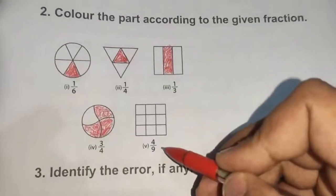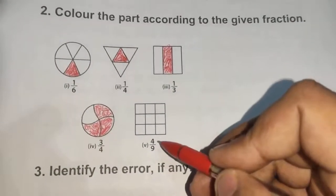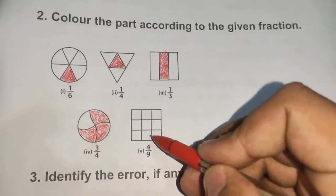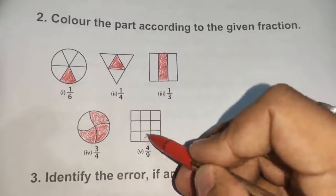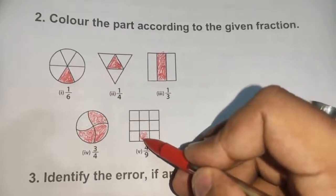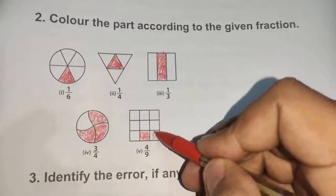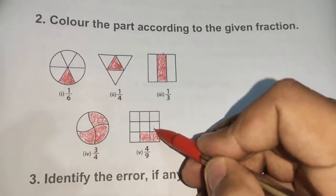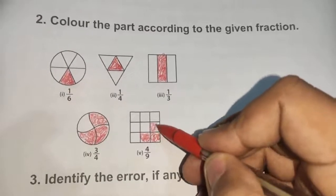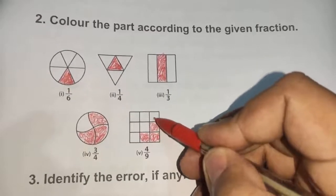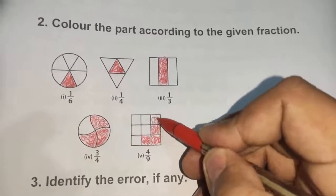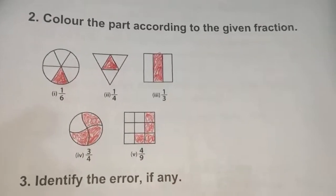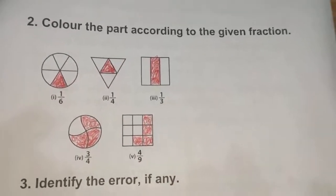For question 5, we have 4 out of 9, so we shade 4 parts: 1, 2, 3, and 4. This represents the fraction 4/9. That completes question number 2.